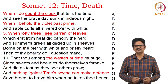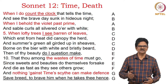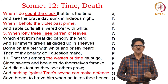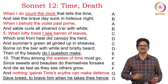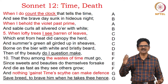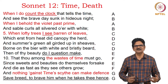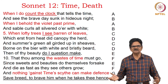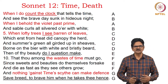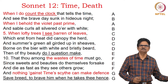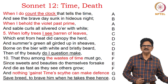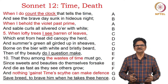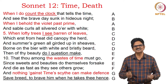First, we will read Sonnet 12, which deals with time and also death. 'When I do count the clock that tells the time, And see the brave days sunk in hideous night, When I behold the violet past prime, And sable curls all silvered over with white, When lofty trees I see barren of leaves, Which erst from heat did canopy the herd, And summer's green all girded up in sheaves, Borne on the bier with white and bristly beard, Then of thy beauty do I question make, That thou among the waste of time must go, Since sweets and beauties do themselves forsake, And die as fast as they see others grow, And nothing against time's scythe can make defence, save breed, To brave him when he takes thee hence.'